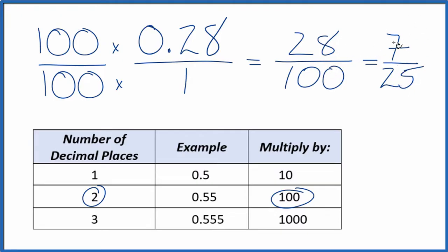We can't simplify this any further. And if you divide 7 by 25, or 28 by 100, you get the decimal 0.28. This is Dr. B, and thanks for watching.